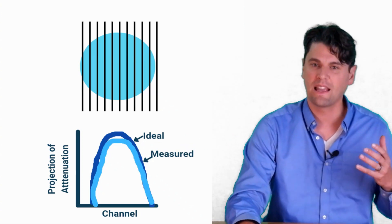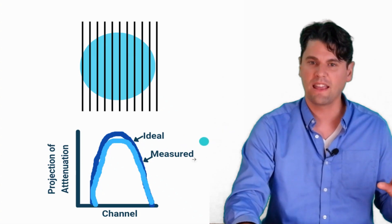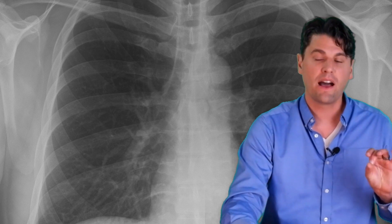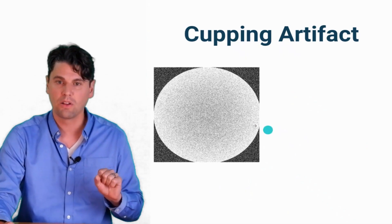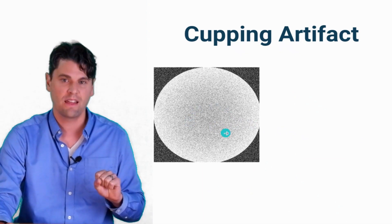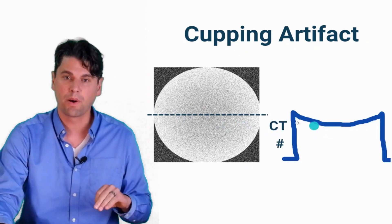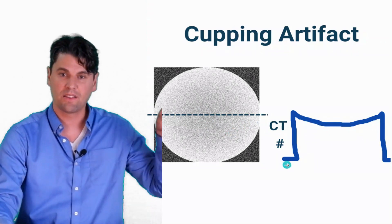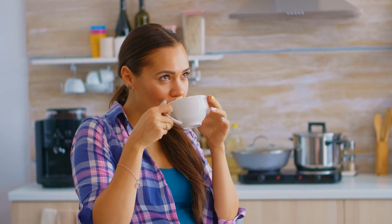If we try to make an image using filtered back projection, we take the signal, filter it, and back project it into the image. Because the projection values in the center are a little bit lower than they should be, the CT values in the middle of the image will also be lower than they should be. We call this a cupping artifact. If you draw a line through the image and look at the line profile — the CT number along that line — there's a dip in the middle that looks like a cup.